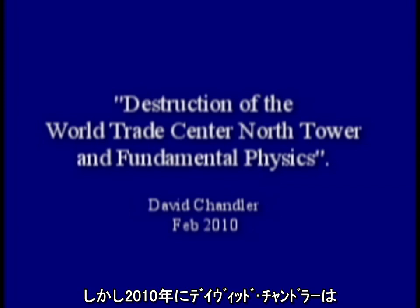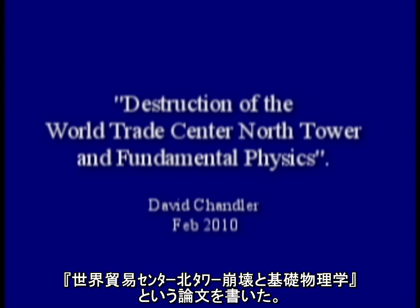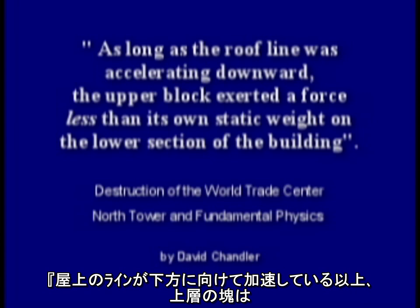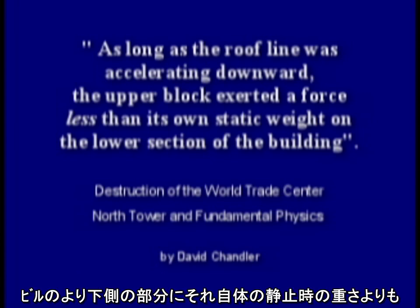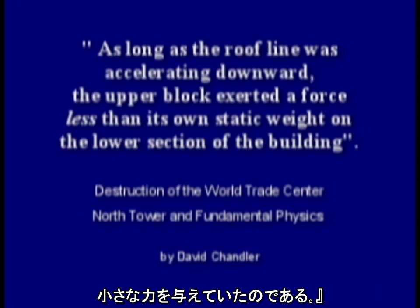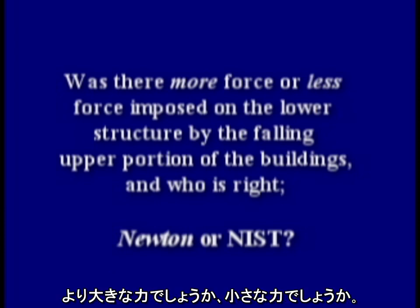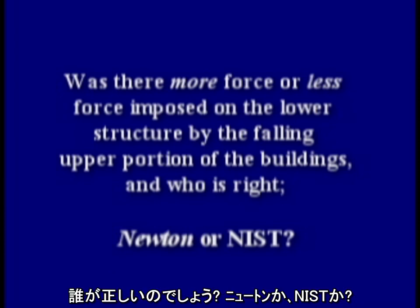But in 2010, David Chandler wrote a paper called 'Destruction of the World Trade Center North Tower and Fundamental Physics.' Citing Newton's laws, he concluded: 'As long as the roof line was accelerating downward, the upper block exerted a force less than its own static weight on the lower section of the building.' So was there more force or less force imposed on the lower structure by the falling upper portion of the buildings? And who is right — Newton or NIST?